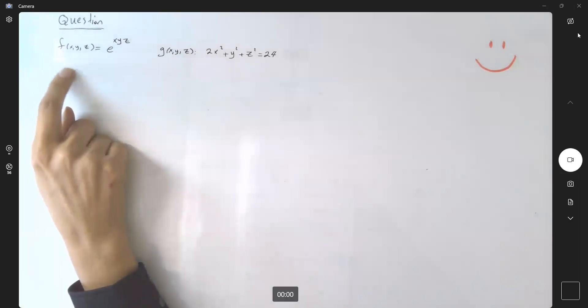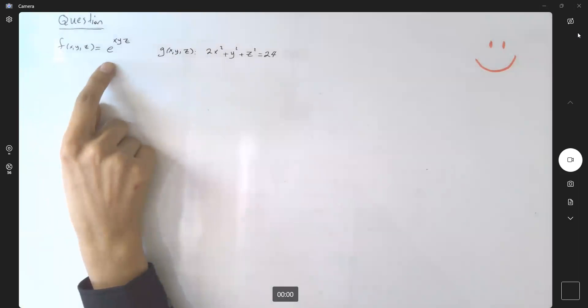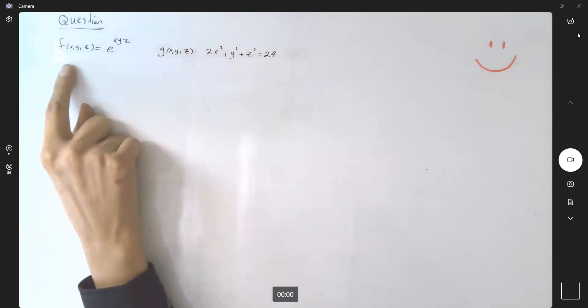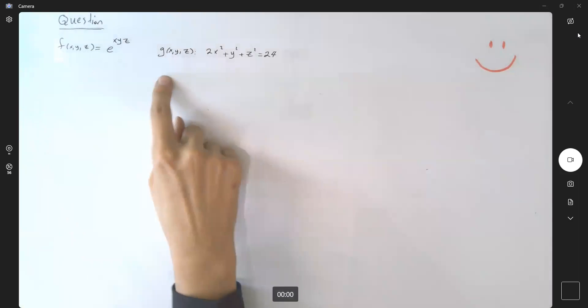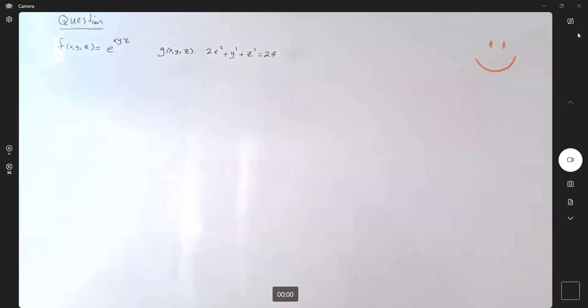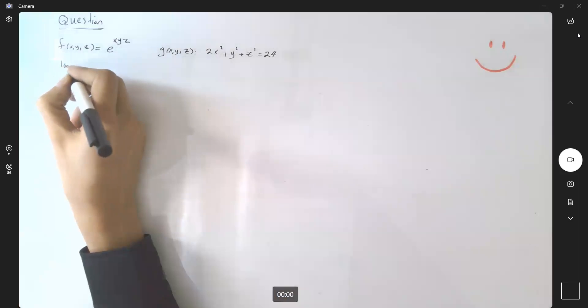Let us make it more interesting. This is your function and you're trying to find the maximum and minimum of this function subject to the constraint given here. So let us apply the Lagrange multiplier method.